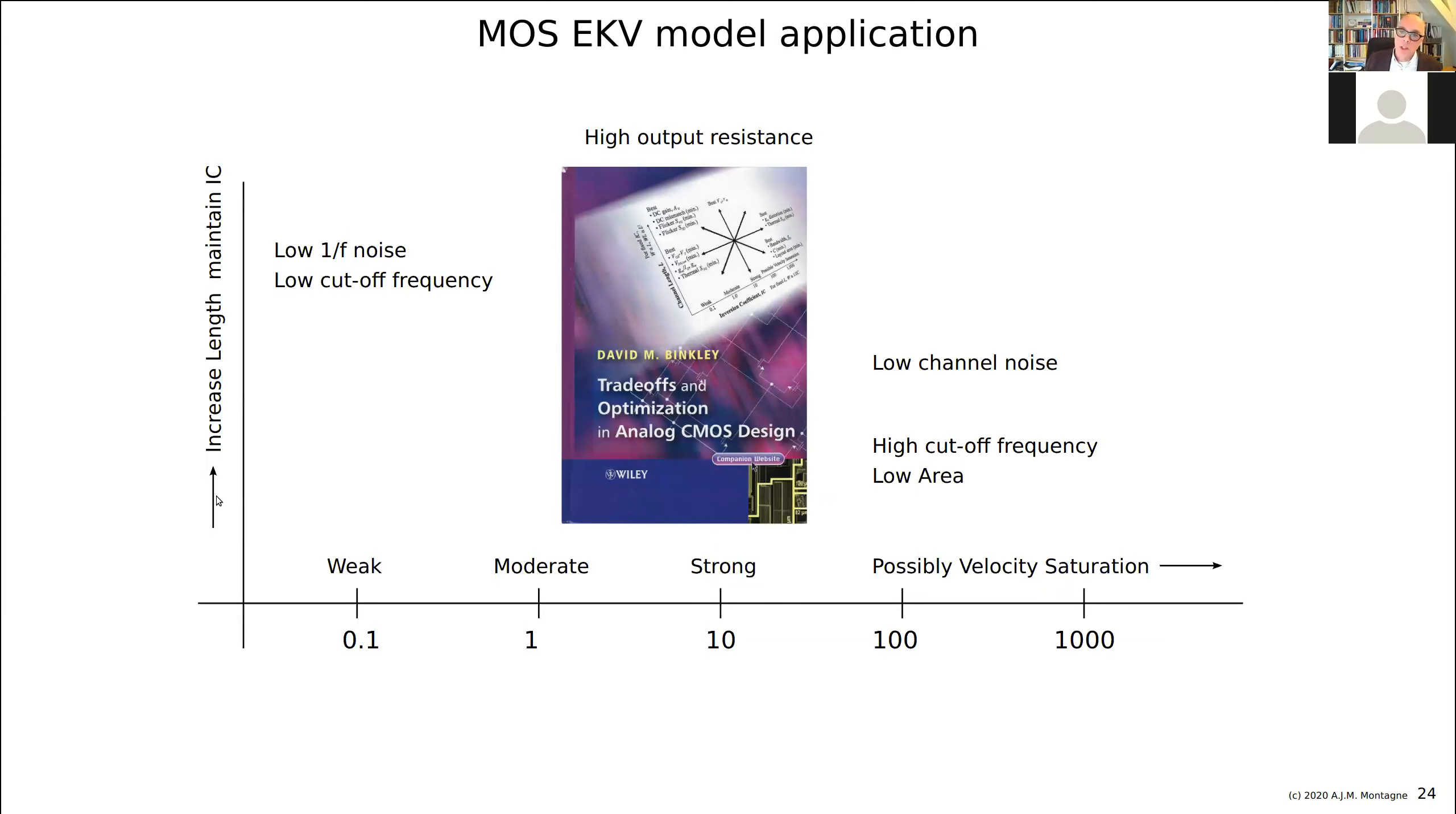It says I increase the length while maintaining the inversion coefficient. And here I'm increasing the inversion coefficient. Inversion coefficient of 1, we call moderate inversion. 0.1 weak inversion, 10 strong inversion. And I think in CMOS 18, about 30, 32, then we have velocity saturation. So we have critical inversion. And here we have the velocity saturation and the short channel effects.